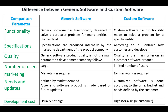The next comparison parameter is specifications. In generic software, specifications are produced internally by the marketing department of the product company, while in custom software, specifications are produced according to a contract between the customer and the developer.